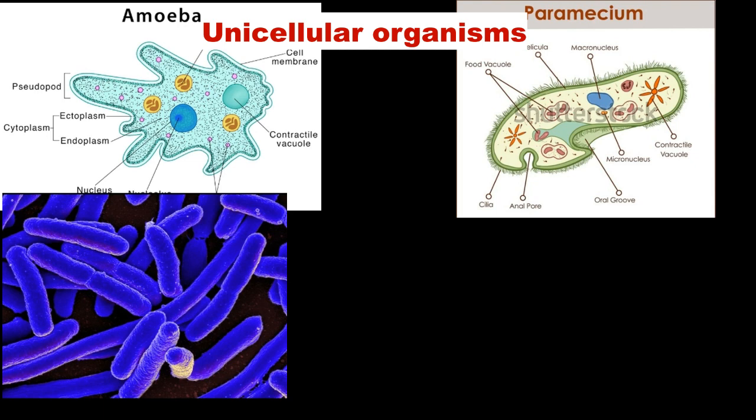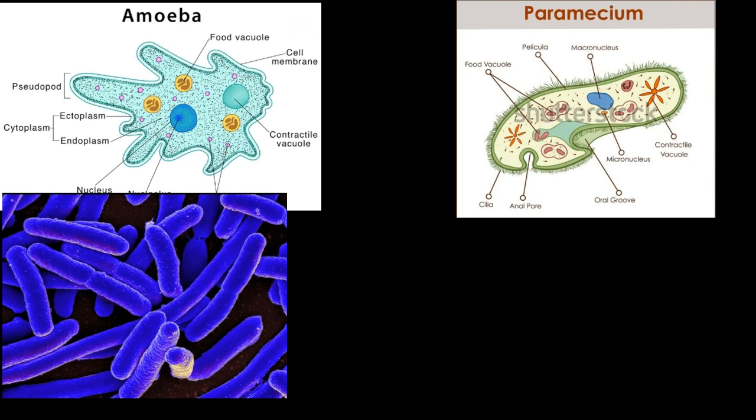Unicellular microorganisms include Amoeba, Chlamydomonas, Paramecium, and E. coli. All of these are unicellular organisms — all functions in the organism are performed by that same single cell.